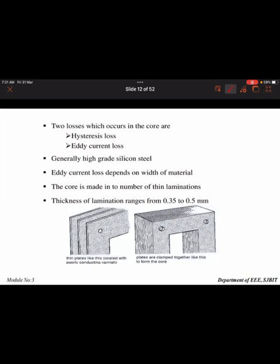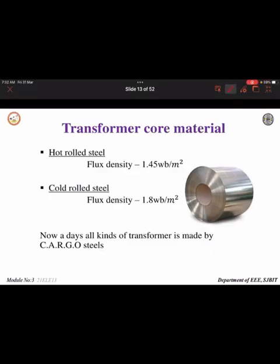There are two types of losses in the core: hysteresis loss and eddy current loss. High-grade silicon steel material is used to make the core. Eddy current loss depends on the width of the material. The core is made up of thin laminations with a thickness in the range of 0.35 to 0.5 mm. Between the thin laminations there is insulation, and they are pressed together to form the core. The transformer core material is hot-rolled steel or cold-rolled steel.